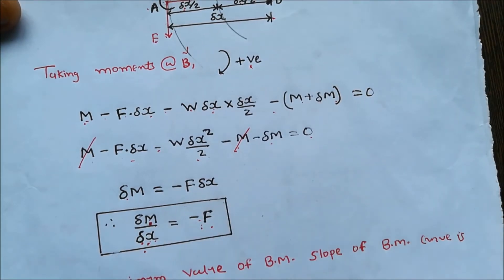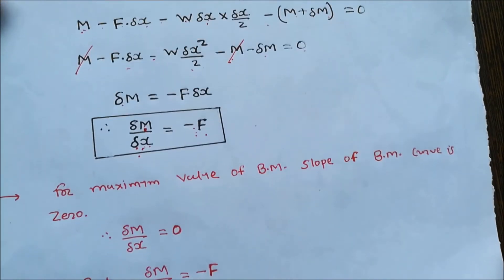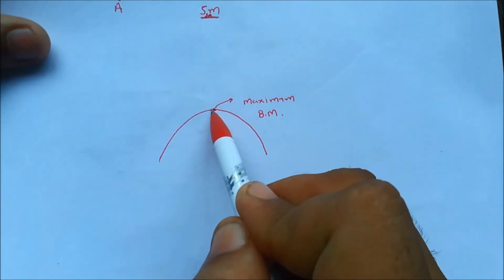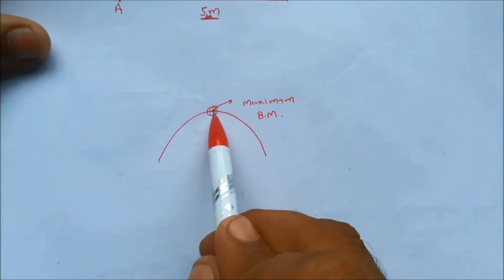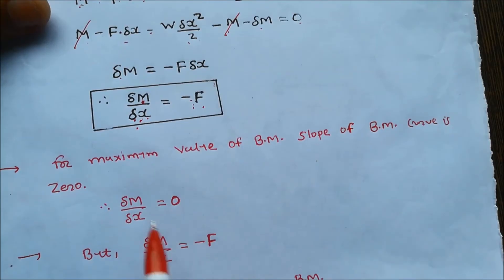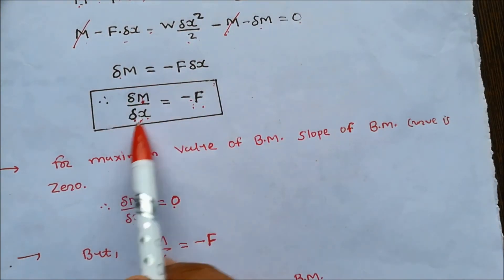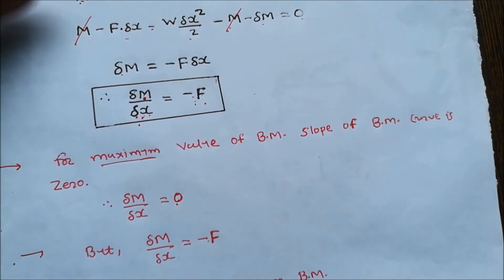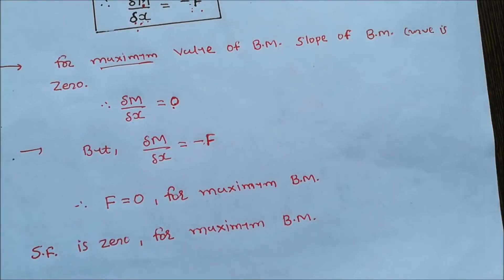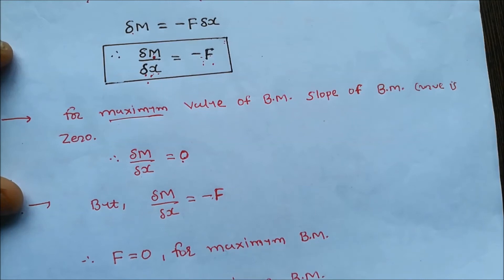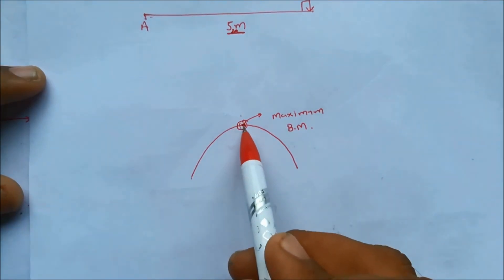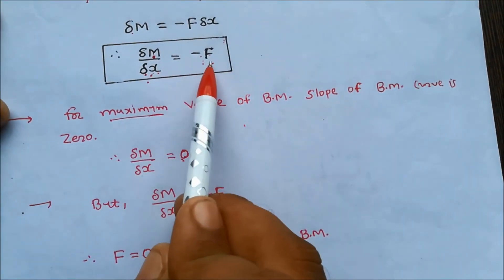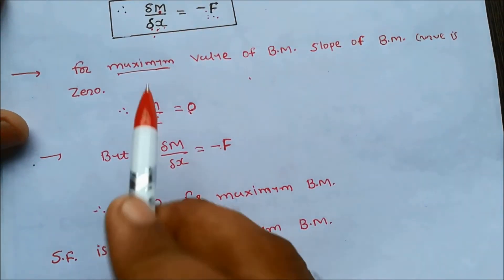Delta M by delta x is the slope of the bending moment curve. For the maximum value of bending moment, the slope of the bending moment curve is zero, so delta M by delta x equals zero. But from our derived equation, delta M by delta x equals minus F. Therefore F equals zero for maximum bending moment — meaning when shear force is zero, the bending moment is maximum.